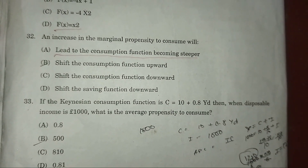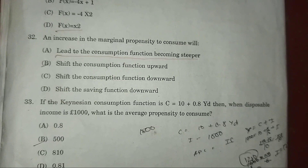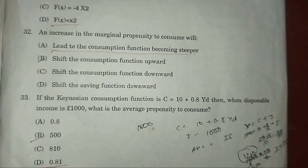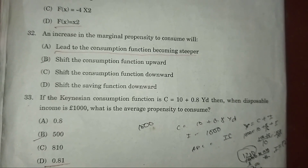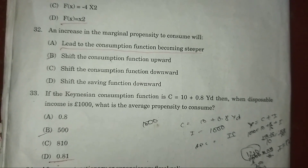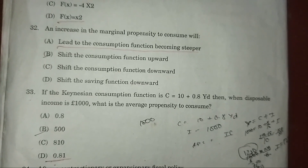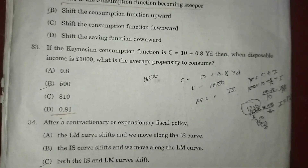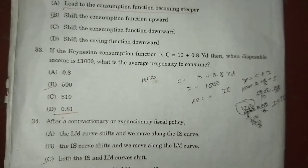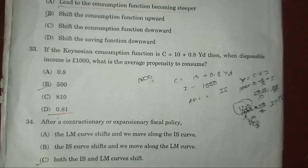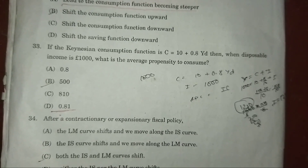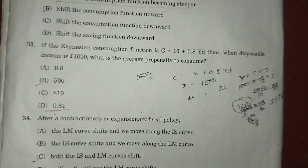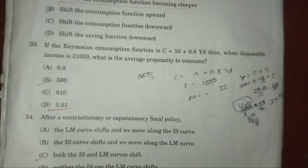Question 32: An increasing marginal propensity to consume will — answer: A — lead to the consumption function becoming steeper. Question 33: If the consumption function is C = 10 + 0.8Yd, then when disposable income equals 1000, what is the average propensity to consume?